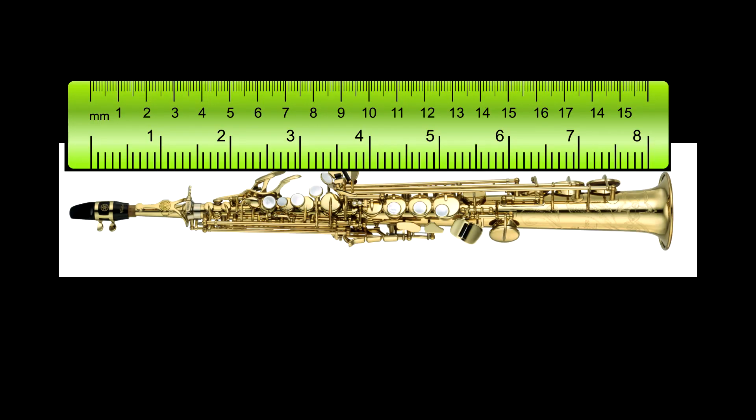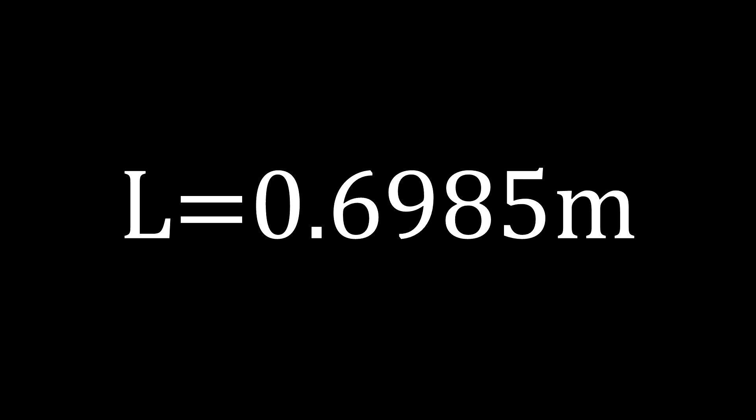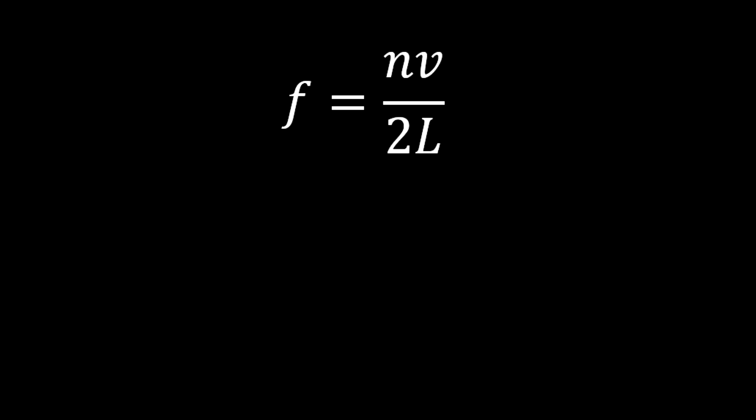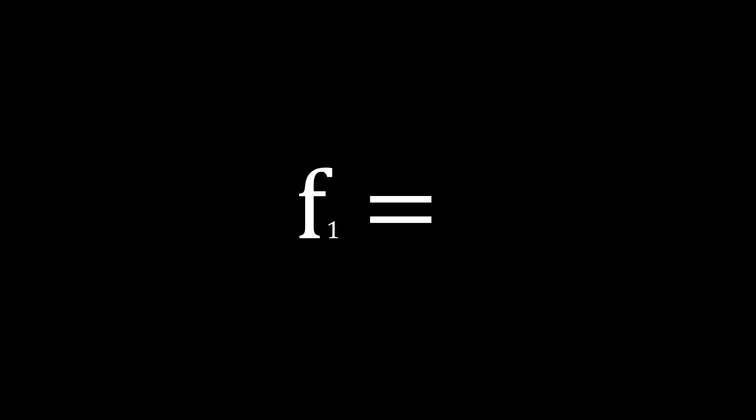Now for the fundamental frequency of the lowest note on the soprano sax. Measuring the length of a soprano saxophone, it turned out to be around 27.5 inches or approximately 0.6985 meters. Plugging that length into the formula frequency = nv / 2l, where velocity v is 343.7 meters per second at 20 degrees Celsius, the calculated frequency is 246.03 hertz. Let's listen to this frequency first and then the lowest note on a soprano sax.